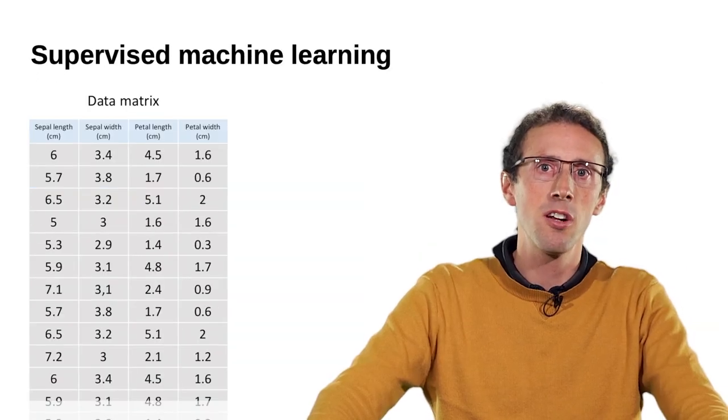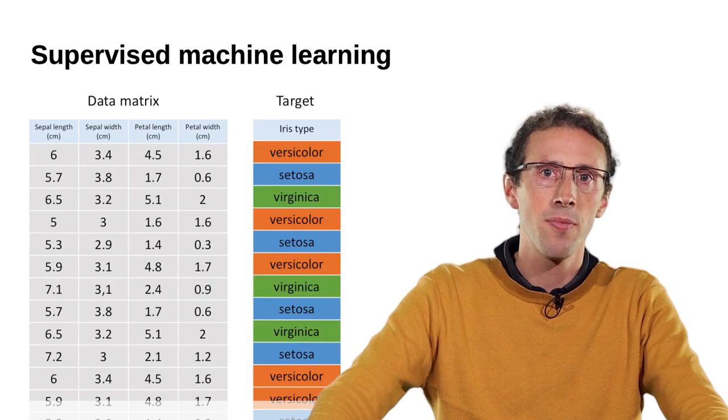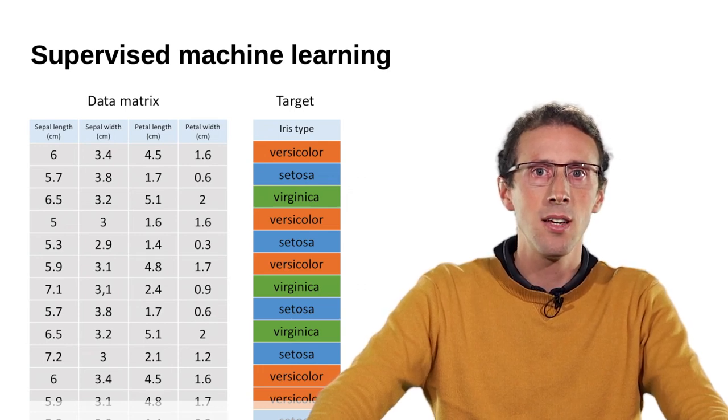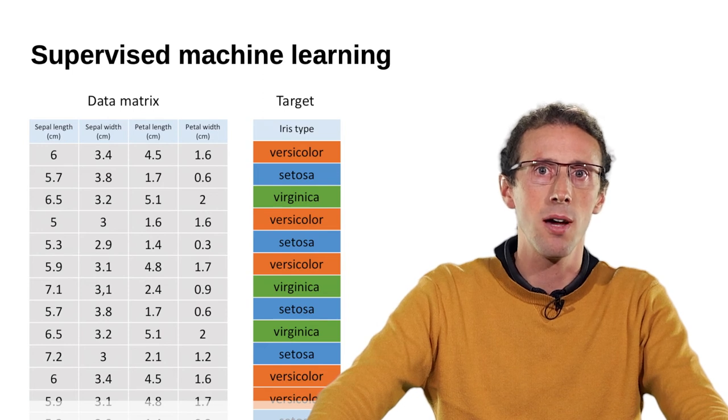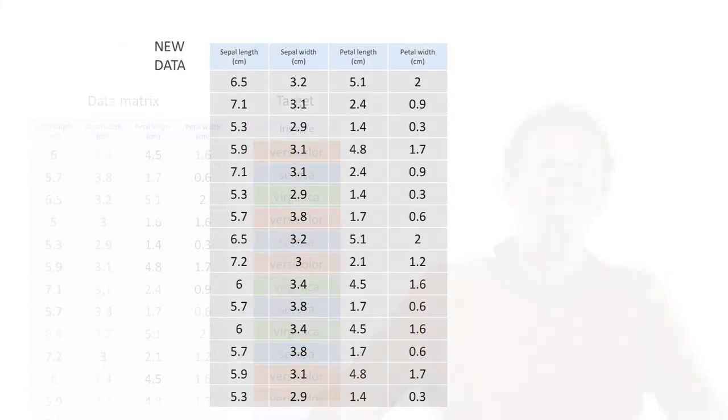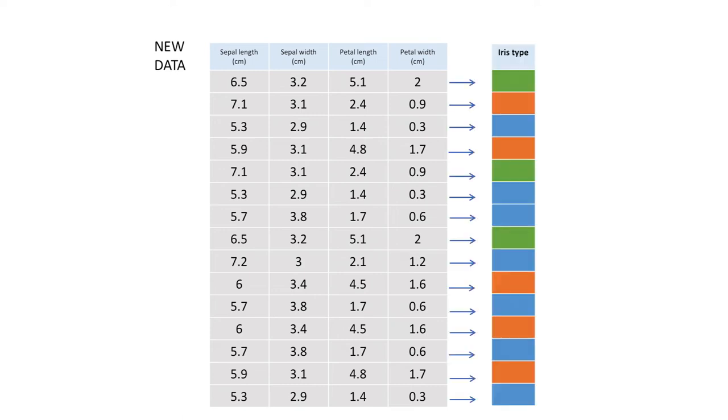In supervised machine learning, the data that we have are annotated. In other words, they are associated with a label or a target class. For irises, each of the points is associated with a type of iris, or target class. The purpose of supervised learning is to predict this target. Here, the type of iris on new data, without annotation, entering only the petal and sepal dimensions.